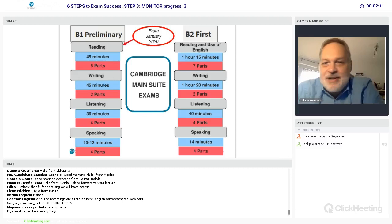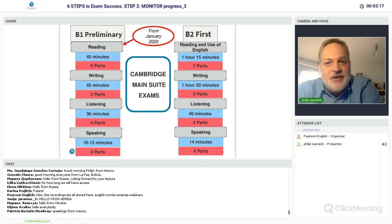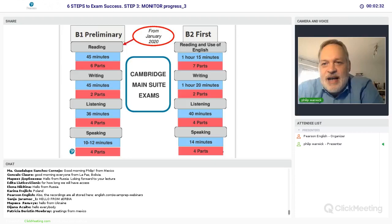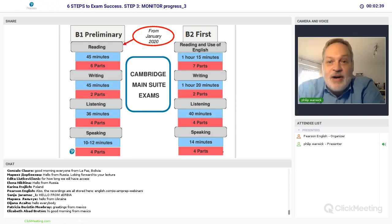When we talk about exams, there are many different international exams — American, British. For reference in this webinar, I'm going to be looking at the Cambridge main suite examinations, particularly the B2 First Certificate, which used to be known as the FCE. Mainly this is because the B1 — the old PET exam — is changing format from January next year and is going to look more similar to FCE, so we'll be using that as a reference point.